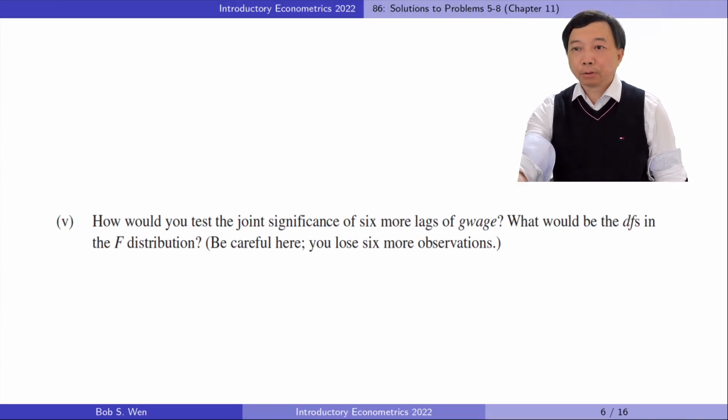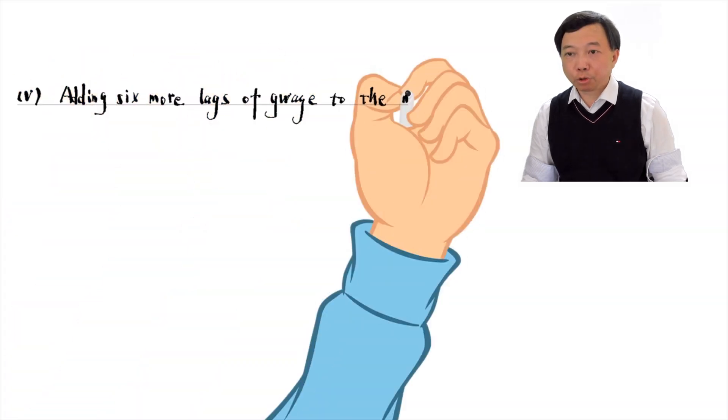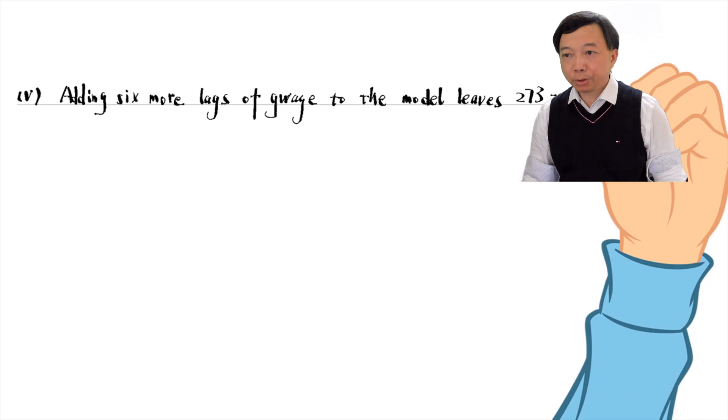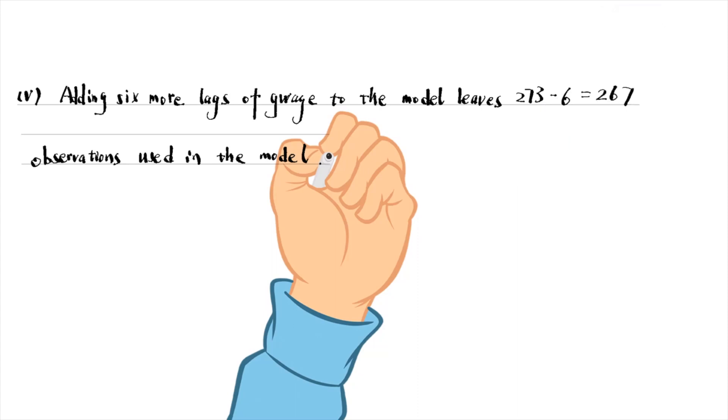In part 5, how would you test the joint significance of 6 small lags of g_wage? What would be the degrees of freedom in the F distribution? After adding 6 small lags of g_wage to the model, we use the test command to perform an F-test for their joint significance. Adding 6 small lags to the model leaves 267 observations in the regression.